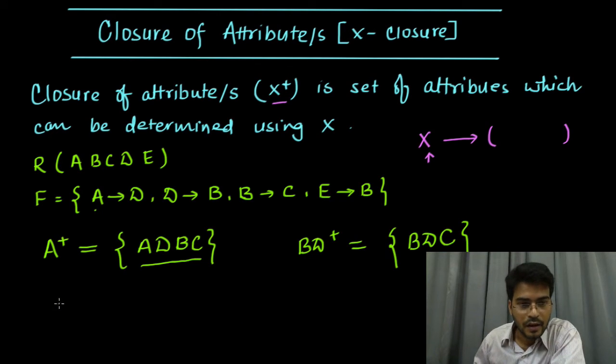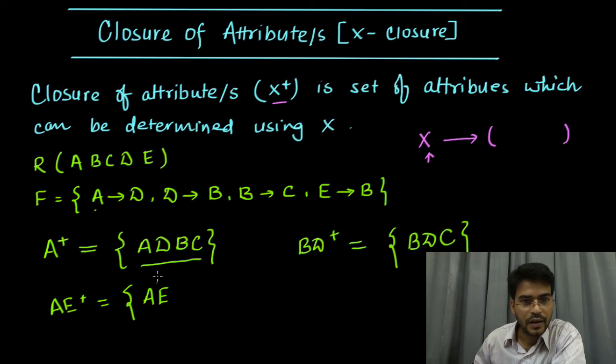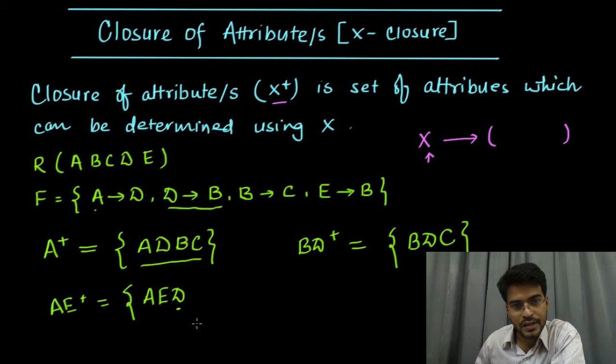Let us now find out the closure for A and E. So A plus: of course these elements will be there, so A and E. Now from A I can determine D, so D. Now from this D attribute, using this functional dependency, I can determine B. So let us include B.